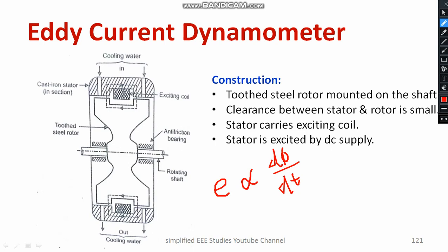There should be a closed path for eddy current. Regarding the eddy current dynamometer arrangement, we have a toothed steel rotor — it is made up of steel material and is a conductor. On the top and bottom sides, there is an exciting coil. Current passes through the coil, generating a magnetic field. We also have a rotating shaft. Our ultimate goal is to measure the torque and angular speed, thereby computing the shaft power.